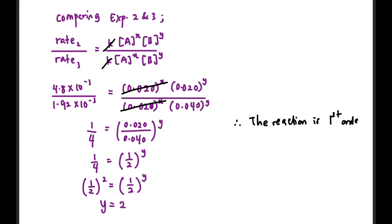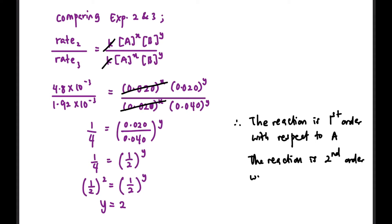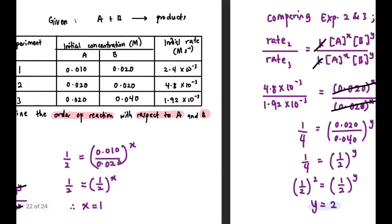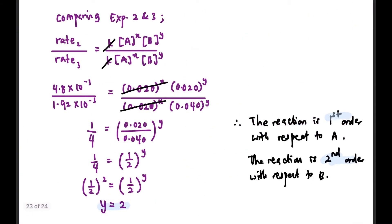Based on this, the reaction is first order with respect to A, and the reaction is second order with respect to B — we find them one at a time. Remember the tip: make sure to find which concentration is the same to cancel out and obtain the order for each reactant.